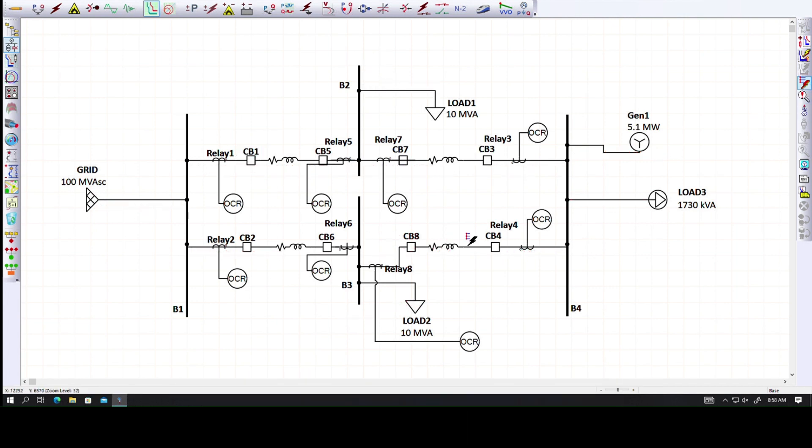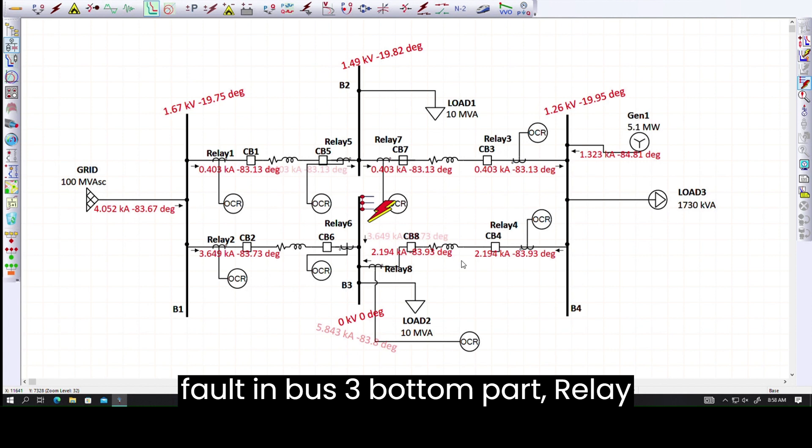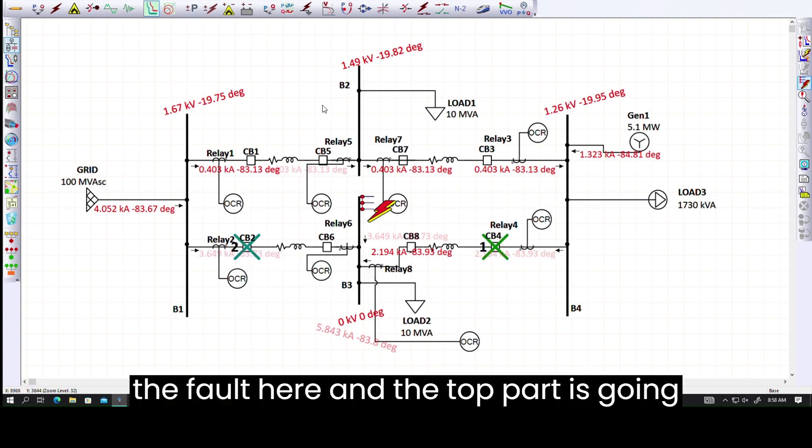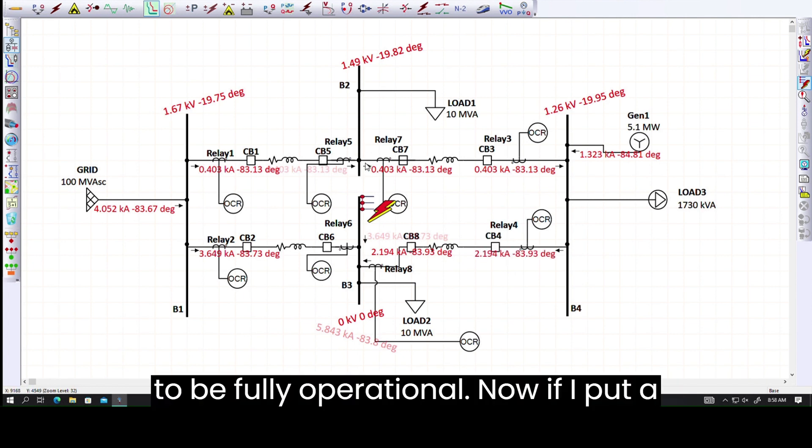Similarly, if I put a fault in bus 3, bottom part, relay 4 and relay 2 are going to trip, isolating the fault here. And the top part is going to be fully operational.